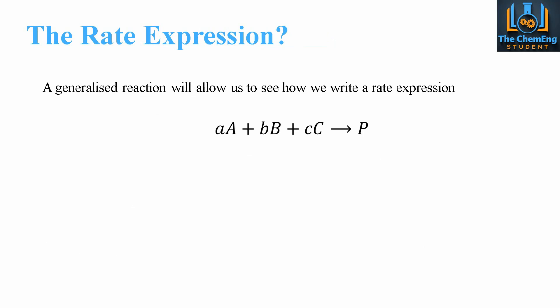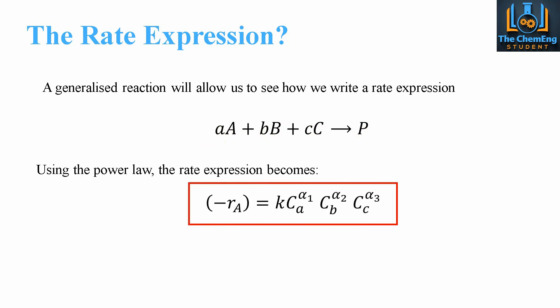A generalized reaction will allow us to see how we can create a rate expression. If we take this very generic reaction: aA + bB + cC → P, and use a power law, then the rate expression becomes the following.